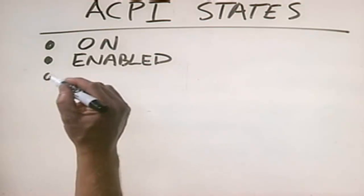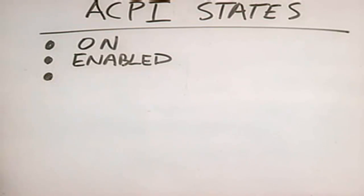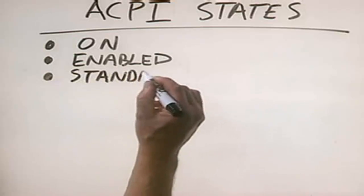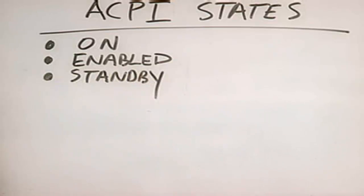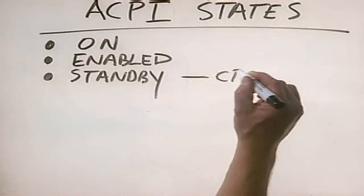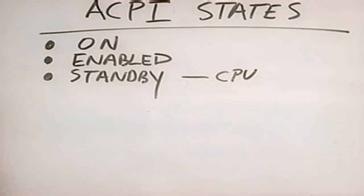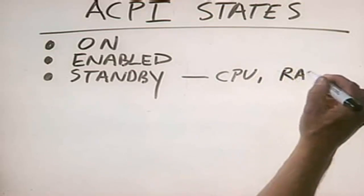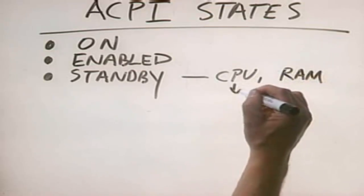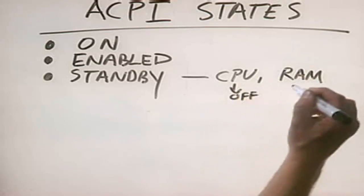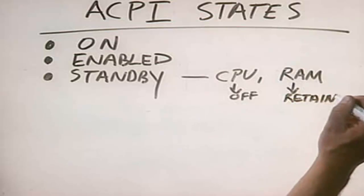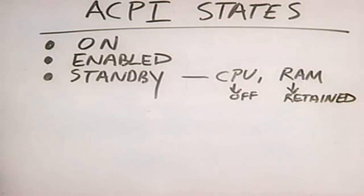The next ACPI state is called Standby. During standby, the CPU is shut down. However, RAM retains its contents. In addition, all peripheral devices are also shut down.